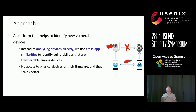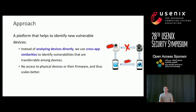With these two insights, how could we design an approach to identify new vulnerable IoT devices? Instead of analyzing each physical device directly, we can use cross-app analysis to identify whether vulnerabilities can transfer among different devices. This approach only requires analyzing the mobile app, with no access to the physical device or its firmware, making it scale much better than previous approaches.